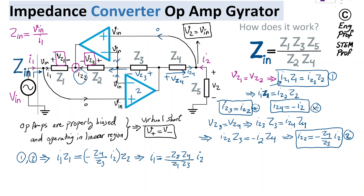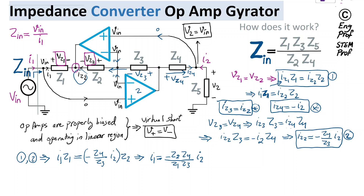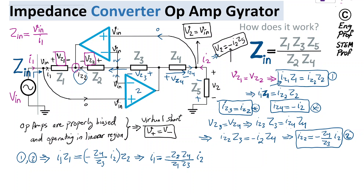The voltage V2 across Z5 has a clear relationship with I2 because I2 flows through Z5 causing a voltage drop counter to the assumed polarity of V2. So obviously, V2 equals negative I2 times Z5. The negative sign is because of the direction of I2 and the polarity of the voltage drop it causes. Let's call this Equation 3.